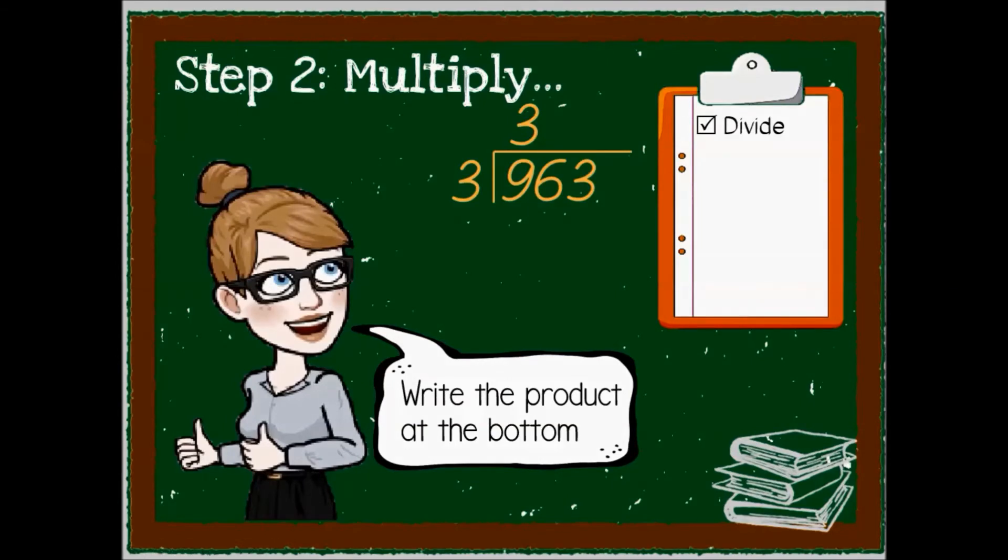Next step is to multiply, from the roof to the door. 3 times 3 is 9. Keep swinging those hips from the roof to the floor. Write it under the 9. Multiplication, tick.